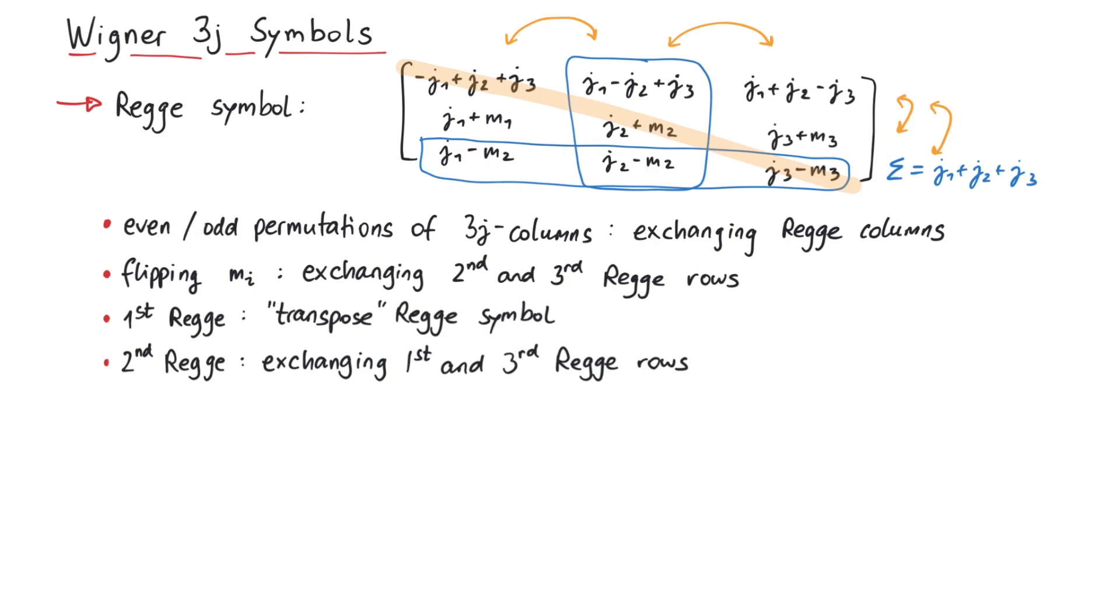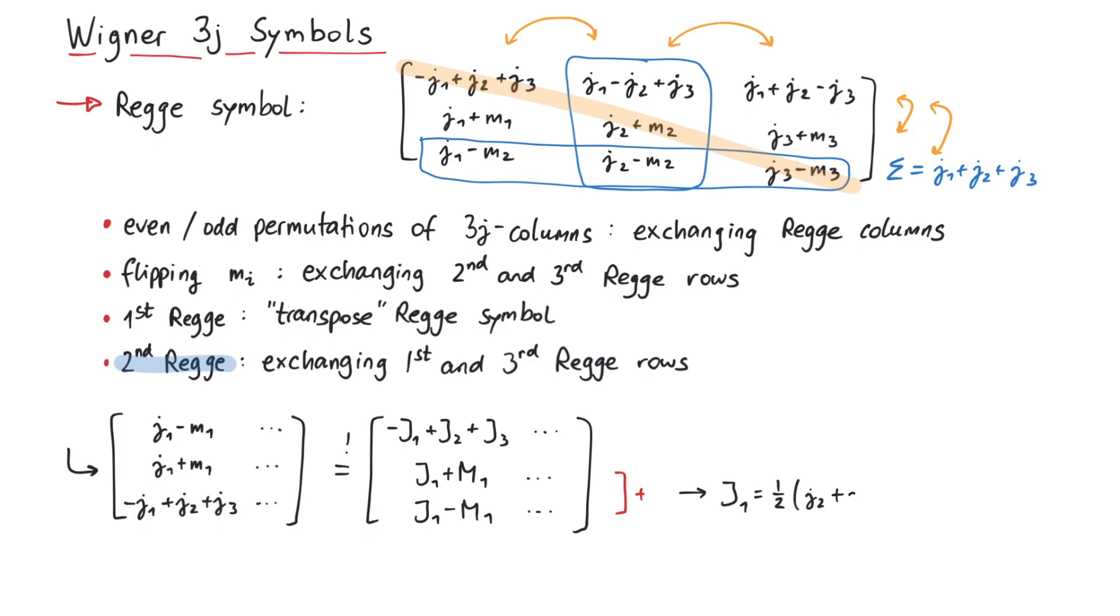This is not immediately obvious, but you have to perform the operation on the Regge symbol, and then set it equal to the initial Regge symbol. Let's take the second Regge symmetry as an example. If we exchange the first and third row, the first column of the Regge symbol will look like this. If we now claim that this is still a valid Regge symbol, it should be equal to some other 3j symbol, where we use uppercase letters in order to distinguish them. By comparing just the first column and adding those two equations, we see that the new uppercase j1 is given by one half times j2 plus j3 plus m1. And this is exactly what goes in the corresponding spot in the 3j symbol after doing the second Regge symmetry operation.